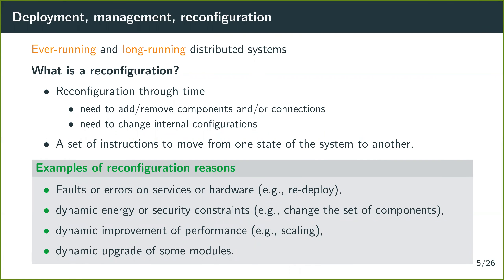When you have a distributed software system, you may want to deploy it on a distributed infrastructure — this is the first part of the lifecycle. We are interested in ever-running and long-running distributed systems, which need reconfiguration over time: adding or removing components or connections, and changing internal configuration. A reconfiguration can be defined as a set of instructions to move from one state of the system to another. Reasons include faults or errors on services or hardware, dynamic constraints like energetic or security constraints, dynamic performance improvements, or upgrades.